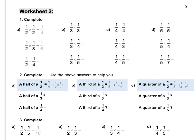Worksheet 2. A half times a half is a quarter, because 2 times 2 is 4 and 1 times 1 is 1. A half times a third is a sixth, because 2 times 3 is 6 and 1 times 1 is 1. A half times a quarter is going to be one eighth. Let's do B together. A third times a third is going to be one ninth. And lastly, a third times a quarter is going to be one twelfth. Press pause to complete question 1 by yourself.